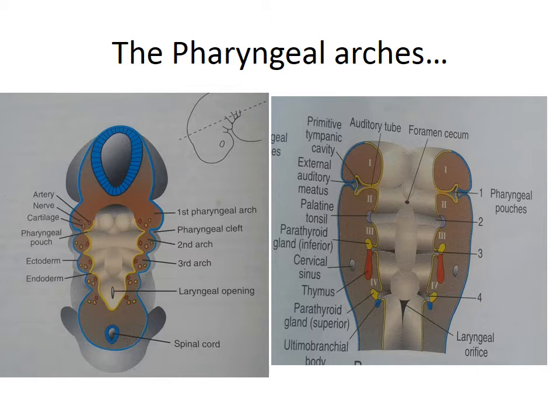Besides the arches, we also learned about the pharyngeal clefts — the grooves that separate the pharyngeal arches externally, lined by ectoderm. The blue colored grooves separating the arches are the pharyngeal clefts. Just opposite to the clefts, the yellow colored grooves separating the pharyngeal arches from inside are the pharyngeal pouches. The number of pharyngeal clefts in the human embryo is four, and the number of pharyngeal pouches is also four.